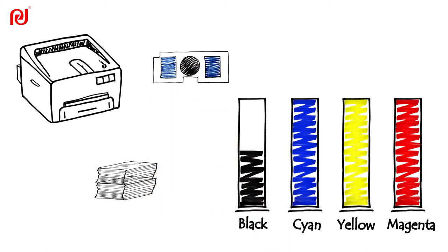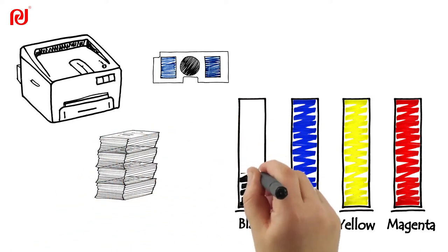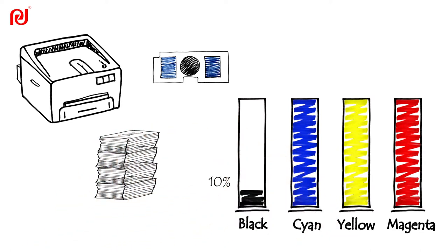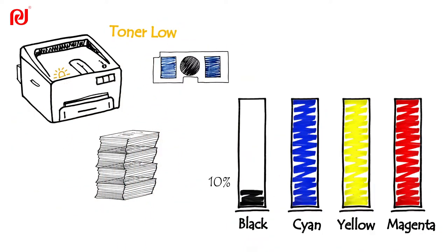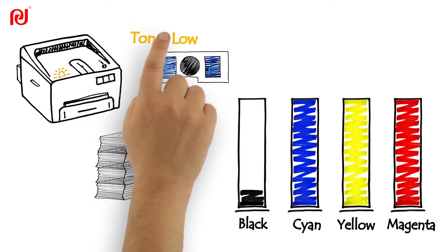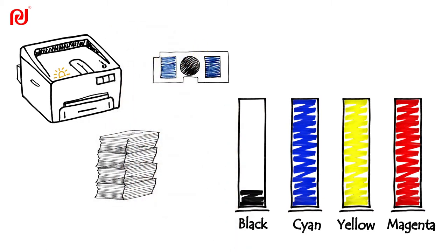When the printer detects there is toner low in cartridge, usually remaining capacity is around 10 percent, it will prompt the LED blinking yellow and the printer will write a low flag to consumables chip.